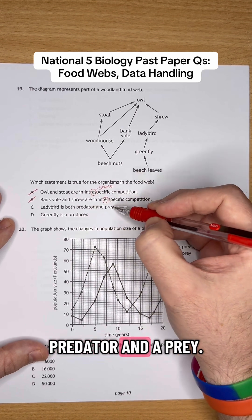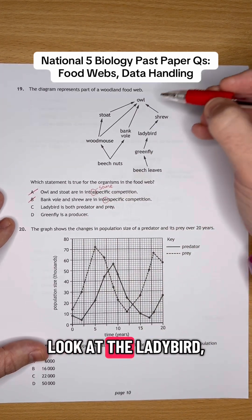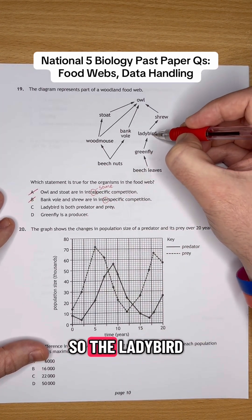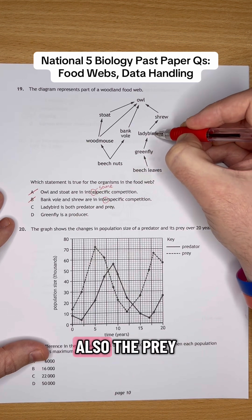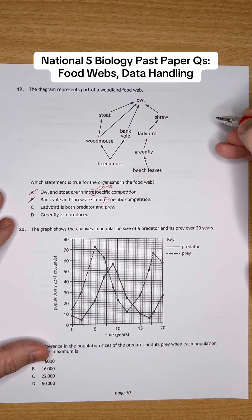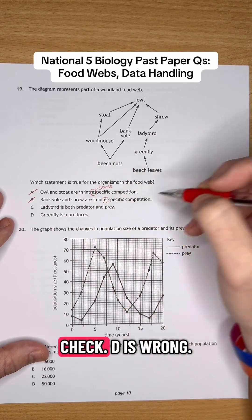C, the ladybird is both a predator and a prey. Let's have a look at the ladybird, which is here. So the ladybird is a predator of the greenfly and it is also the prey of the shrew. So we think it's going to be C, but let's just check D is wrong.